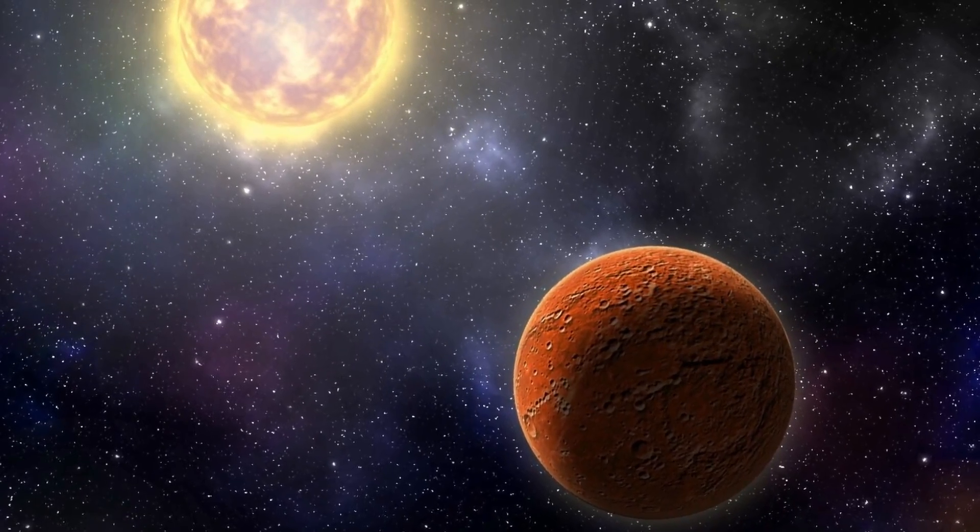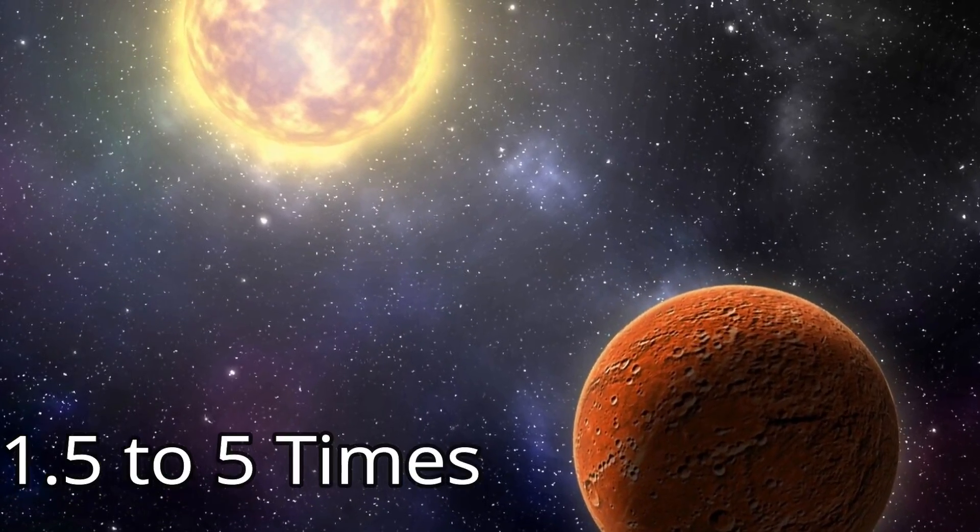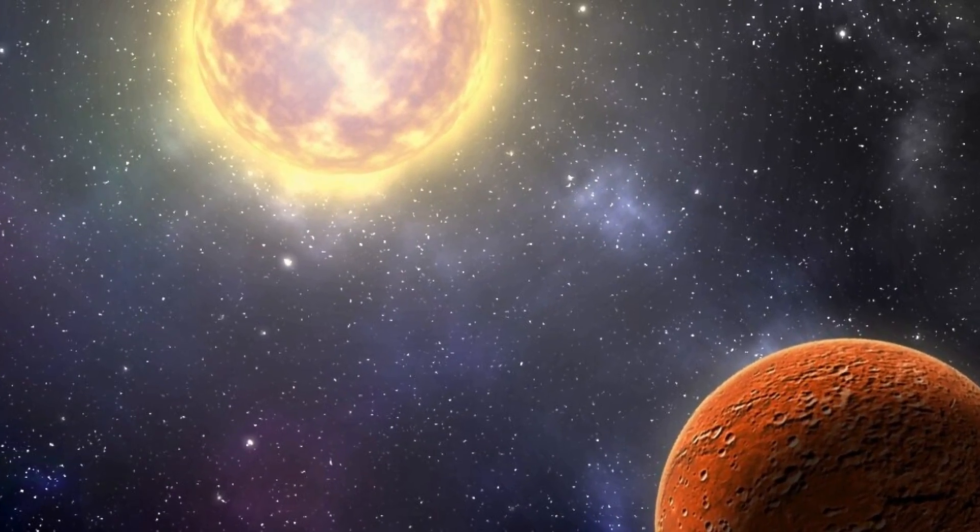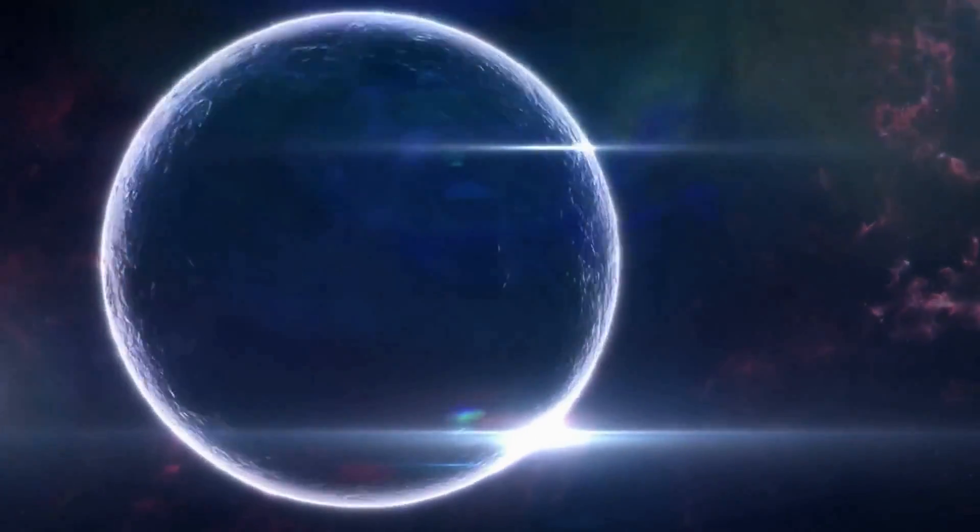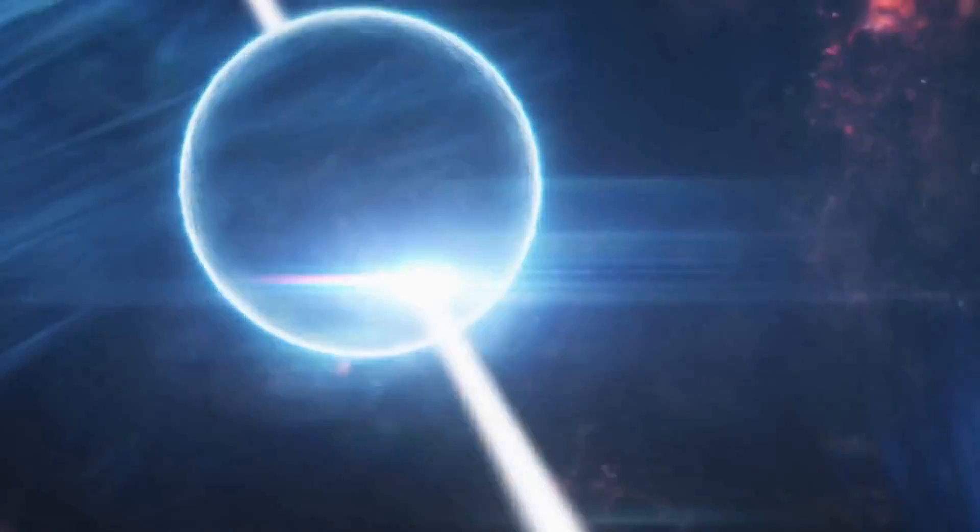When a dying star has a mass which is 1.5 to 5 times that of the sun, it will form a neutron star. Neutron stars spin very rapidly, about hundreds of spins per second.